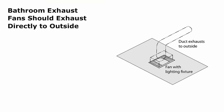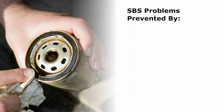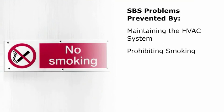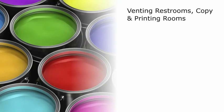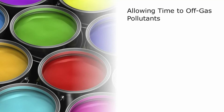Bathroom exhaust fans should exhaust directly to the outside. Many of the problems people have with adverse reactions to building contaminants develop after new construction or renovation. Renovations in occupied buildings are especially likely to introduce pollutants into the building's interiors. SBS problems can be prevented by maintaining the HVAC system including periodic filter replacement, replacing water-stained ceiling tile and carpet, prohibiting smoking, venting restrooms, copy rooms, and printing facilities to the outside, storing and using paints, adhesives, solvents, and pesticides in well-ventilated areas or unoccupied spaces, and allowing time for building materials in new or remodeled areas to off-gas pollutants before occupancy.